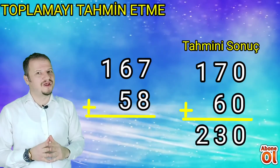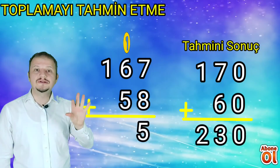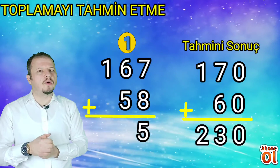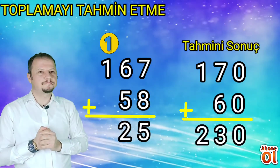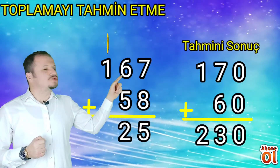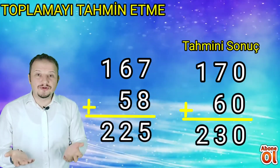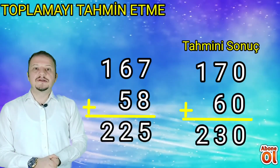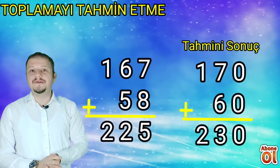Şimdi gerçek sonucu bulalım. 7 birlik + 8 birlik = 15 eder; 15'in 5'ini yazıyoruz, elde var. 1 10'luk + 6 10'luk + 5 10'luk = 12, bir de elde vardı: 12 10'luk; 12'nin 2'sini yazıyoruz, elde var 1 100'lük. Yüzler basamağında bir tane 100'lük var, bir de elde: 2 100'lük eder. İşlemimizin gerçek sonucu 225'tir. Biz bu toplama işlemini 5 sayı farkla tahmin etmiş olduk.